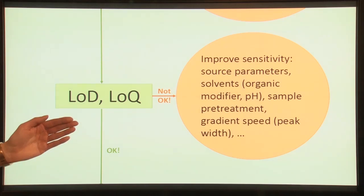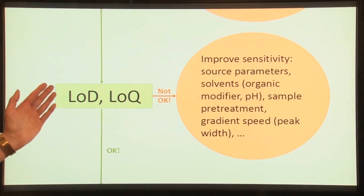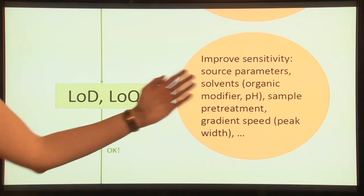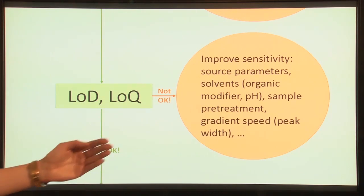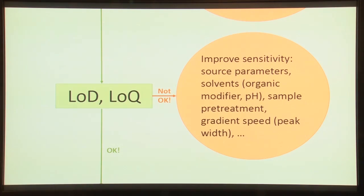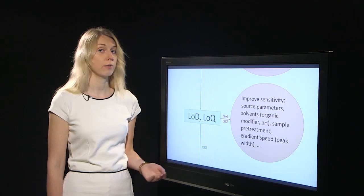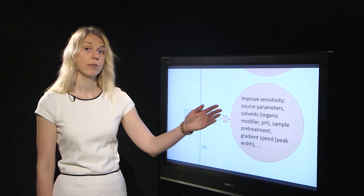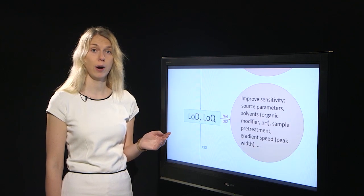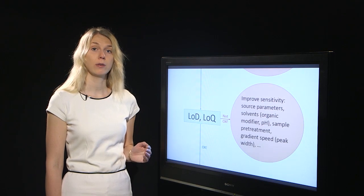If recovery and matrix effect are acceptable, we can move on from trueness to limit of detection and limit of quantitation. If LOD or LOQ are not acceptable, you should try to modify the sensitivity of your method. This means adjusting the ionization parameters, mobile phase parameters, mobile phase components, or trying to adjust the gradient speed, for example. If you make these modifications, they will also influence previous validation parameters and you should begin from stability again.